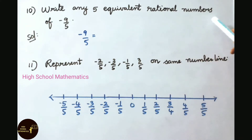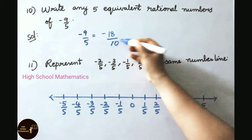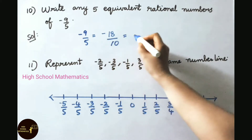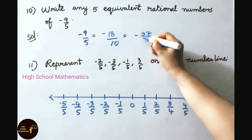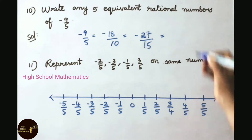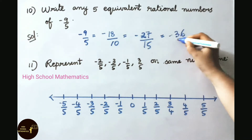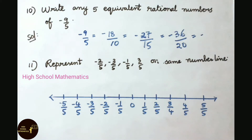Question number 10: Write five equivalent rational numbers of minus 9 by 5. Multiply numerator and denominator by 2: keeping the minus sign, 9 twos are 18, 5 twos are 10, giving minus 18 by 10. Multiply by 3: 9 threes are 27, 5 threes are 15, giving minus 27 by 15. Multiply by 4: 9 fours are 36, 5 fours are 20, giving minus 36 by 20. Multiply by 5: 9 fives are 45, 5 fives are 25, giving minus 45 by 25.